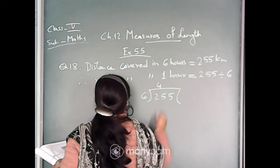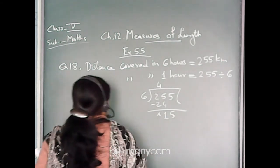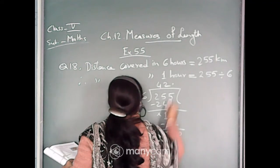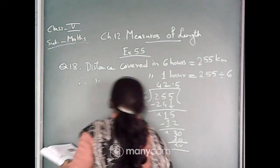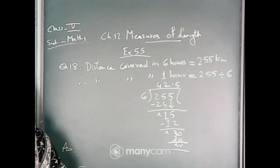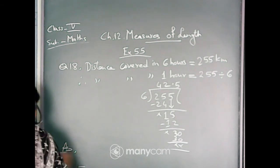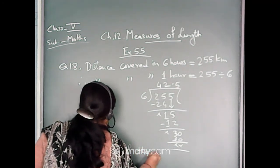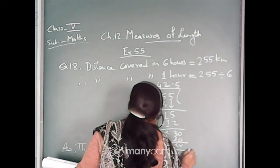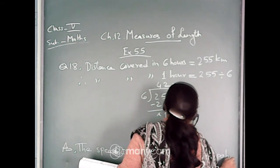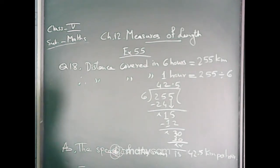6 fours are 24, subtraction 1 and this 5 will come. Now 6 twos are 12, subtraction 3. Then after the decimal point, 0 will come and 6 fives are 30. That means 42.5. So our answer will be: the speed of the man is 42.5 km per hour.